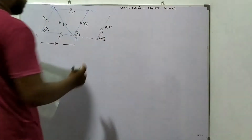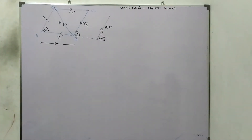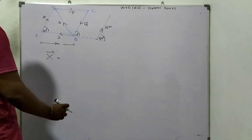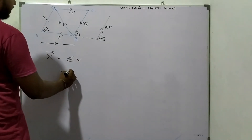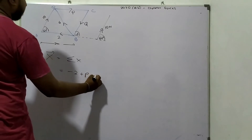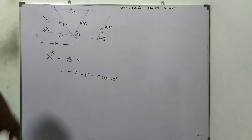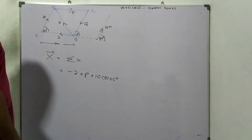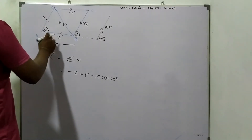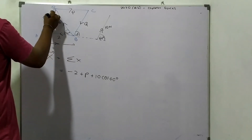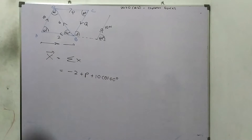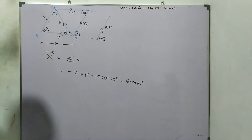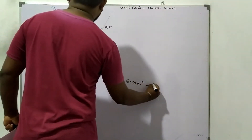This angle is 60 degrees. It's parallel to BC in the sense B to C direction. Taking the x-component: sigma x equals minus 2 plus P, 10 cos 60. Since it's a rhombus all angles are 60 degrees. Minus 6 cos 60, minus Q cos 60.